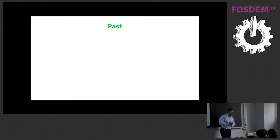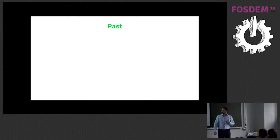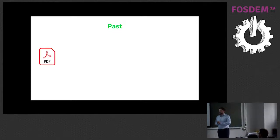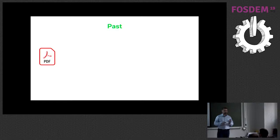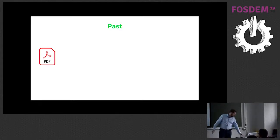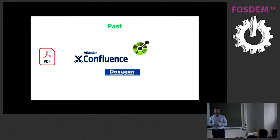Before talking about the future with GraphCMS, I want to quickly talk about what we had in the past. About five years ago, most of our documentation was distributed and produced as PDF files. It's difficult to create, difficult to maintain, difficult to keep up to date, difficult to distribute to all customers ensuring they have the latest version, and difficult to analyze or get any feedback. So we migrated from PDF files to Confluence, which is a wiki-based system.